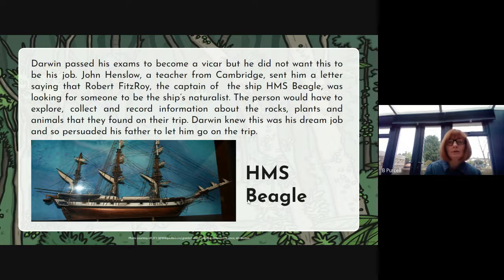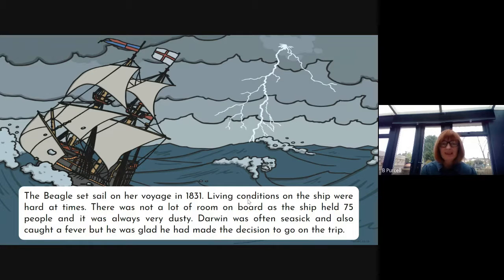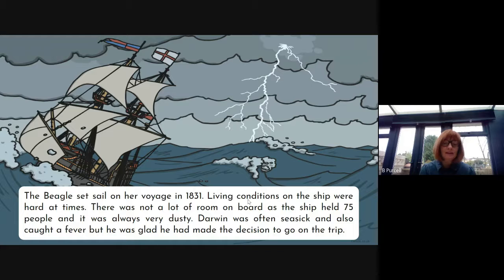We'll be looking more at HMS Beagle and the voyage, the route that he took, in another lesson. The Beagle set sail on her voyage in 1831 — ships are always regarded as female. Living conditions on the ship were hard at times. There was not a lot of room on board; the ship held 75 people and it was always very dusty and smelly because they wouldn't have had the resources and luxuries we have today like flushing toilets and running water. Darwin was often seasick and also caught a fever but he was always glad that he made the decision to go on the trip.